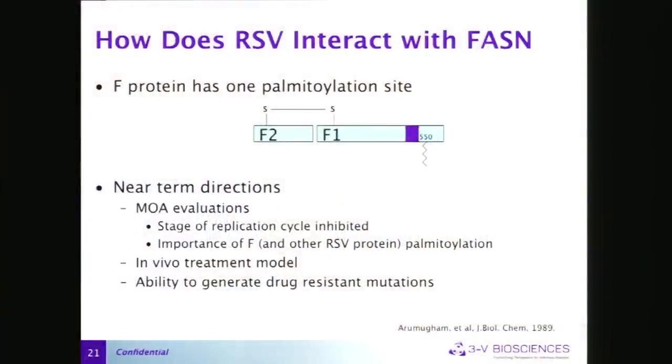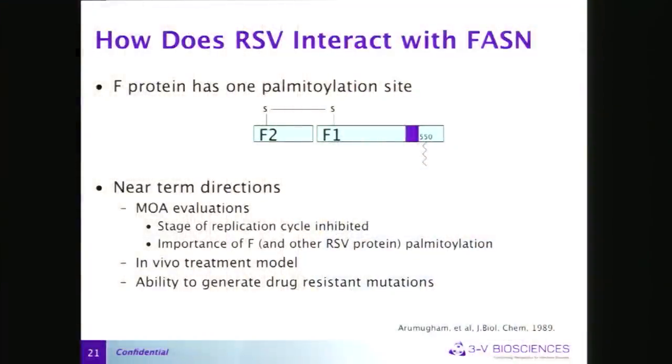Why does FASN inhibition block RSV? We don't know yet. The RSV F protein does have one palmitylation site past the transmembrane domain — whether it's important we haven't determined genetically. It's also possible other palmitylated proteins or fatty acid derivatives are involved. RSV is a membrane-bound virus that probably uses membranes throughout its lifecycle. We're now getting into mechanism-of-action studies, in vivo animal models, and resistance studies for RSV, both in vitro and in animals.